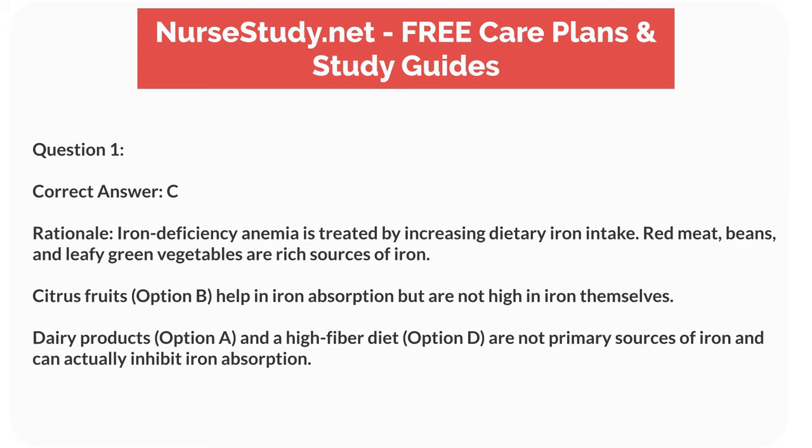Correct answer: c. Rationale: iron deficiency anemia is treated by increasing dietary iron intake. Red meat, beans, and leafy green vegetables are rich sources of iron. Citrus fruits, option b, help in iron absorption but are not high in iron themselves. Dairy products, option a, and a high-fiber diet, option d, are not primary sources of iron and can actually inhibit iron absorption.